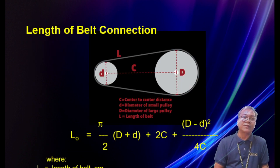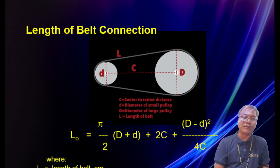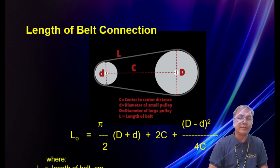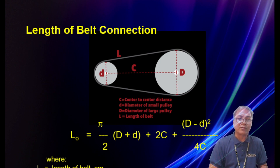Next is the length of belt. For example, if you have a rice mill and the belt breaks, you need to compute the replacement belt length. The formula for finding the belt length needed is: L = (π/2)(D + d) + 2C + (D - d)² / (4C), where D is the diameter of the bigger pulley, d is the diameter of the smaller pulley, and C is the distance between the centers of the pulleys in centimeters.